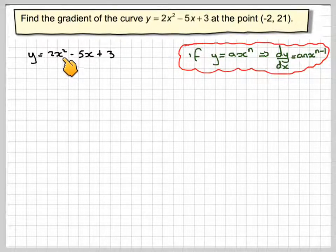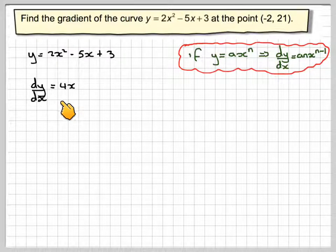So this will become, when we differentiate 2 times 2, which is 4x, so 4x, and this one will become just minus 5, and you get 0 from the 3. So this is the formula which now represents the gradient at any point on this curve.